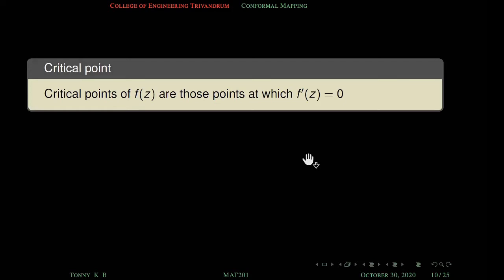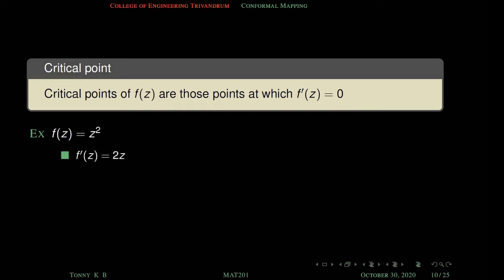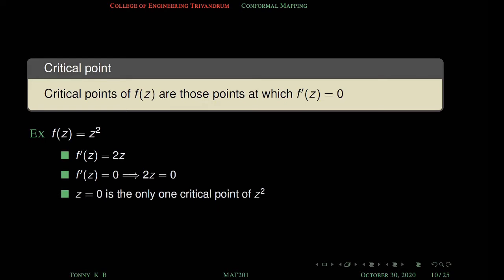First we are going to define critical points. Critical points of f(z) are those points at which f'(z) equals zero. For example, consider f(z) equal to z square. Differentiating, f'(z) equal to 2z. Setting f'(z) equal to zero gives 2z equal to zero, which implies z equal to zero. So z equal to zero is the only critical point of z square.